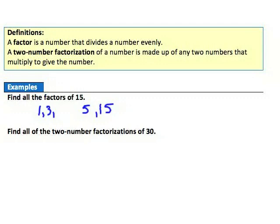The next example: find all two-number factorizations of thirty. We're looking for all pairs of numbers that multiply to give us thirty. Starting small: one times thirty; two times fifteen; three times ten; five times six. Four won't go into thirty. Notice five and six are very close together, so we know we've found all the two-number factorizations of thirty.